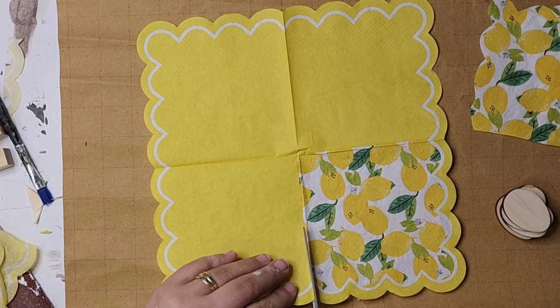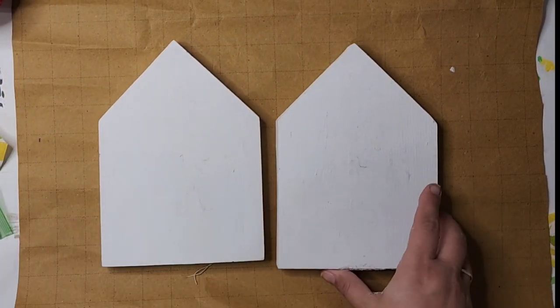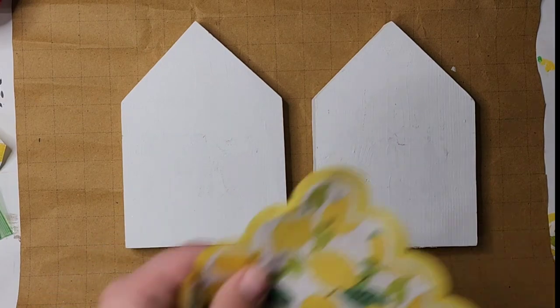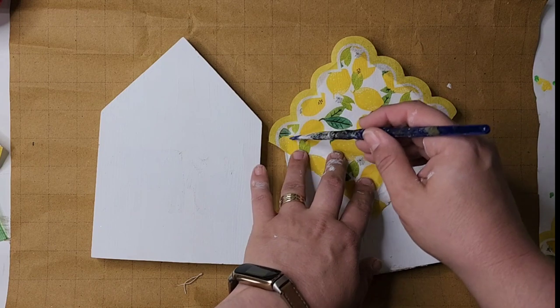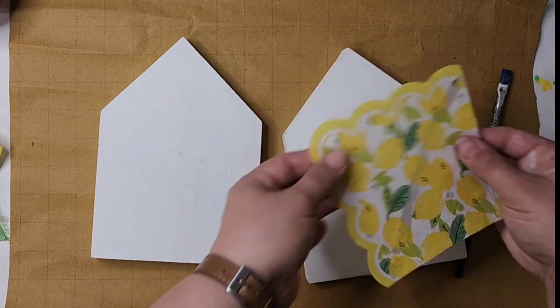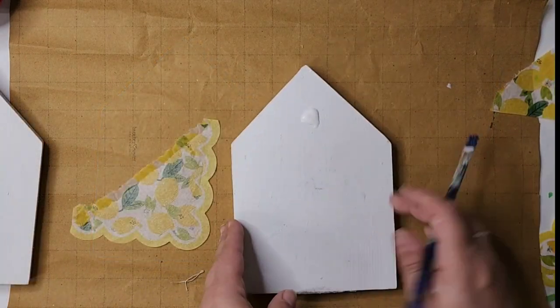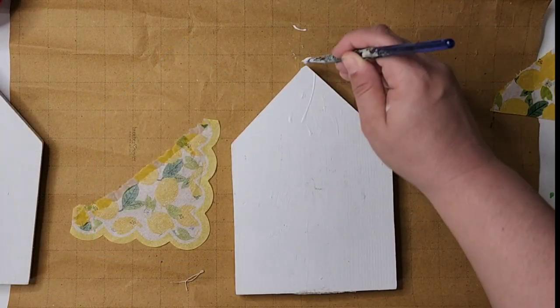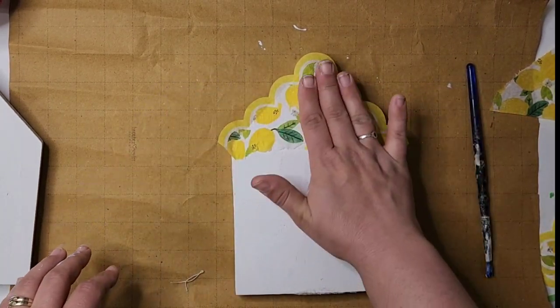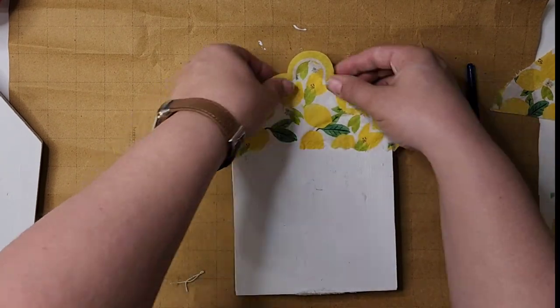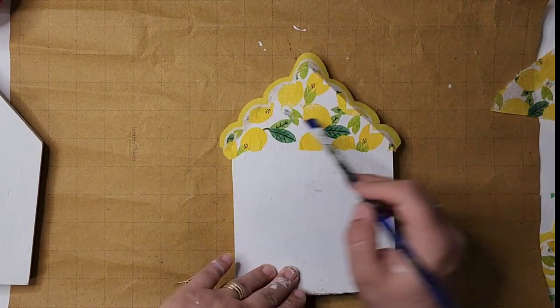This lemon napkin I picked up at Tuesday Mornings. I'm using two wood houses that I cut out for an earlier project and just had them in my stash, painted white. The top of the roof is like a 45 degree angle. I'm just Mod Podging the lemon to the top of the roof here.